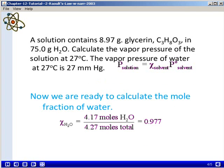Now we are ready to calculate the mole fraction of water. The mole fraction of water is equal to the number of moles of water divided by the total number of moles present. So we will take 4.17 moles of water divided by the total number of moles, which is 4.27. This gives us a mole fraction of 0.977.